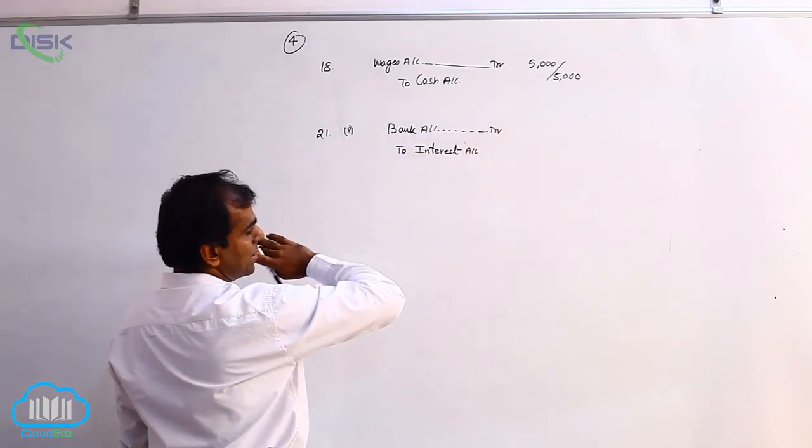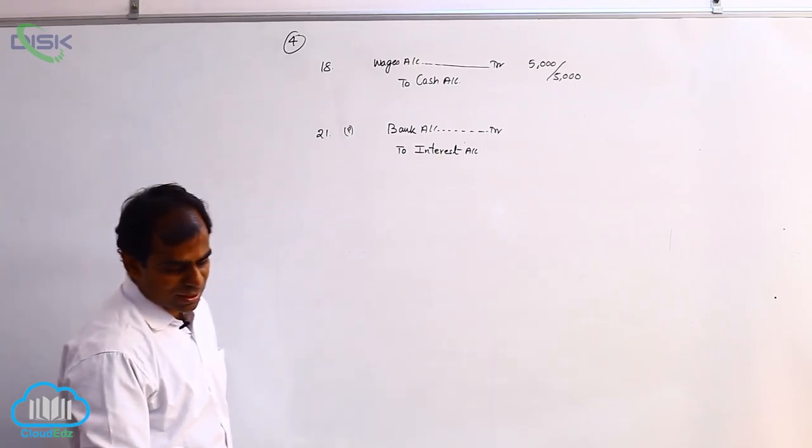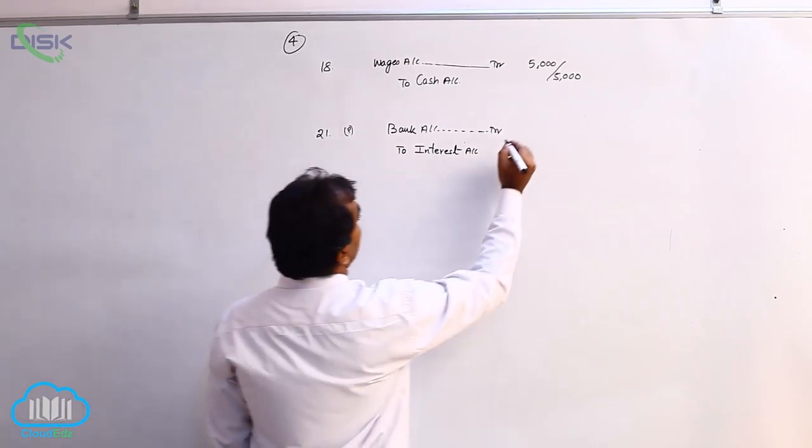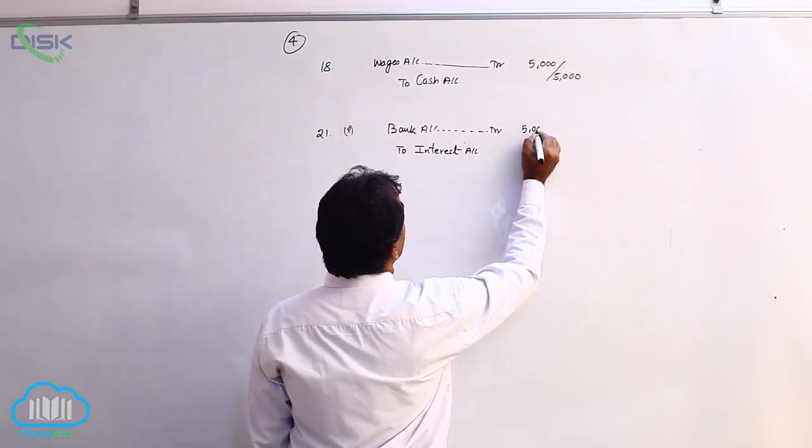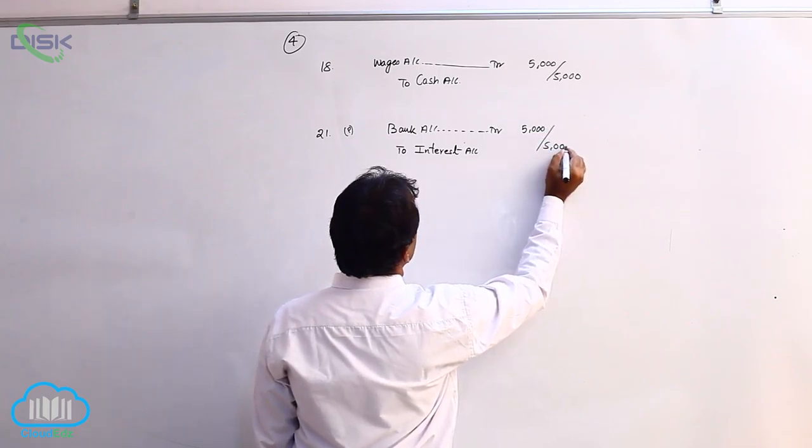So bank account debit to interest account and the amount being 5000. Your narration would be being interest received through cheque.